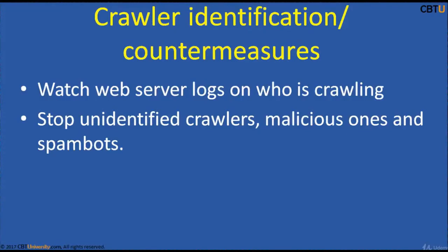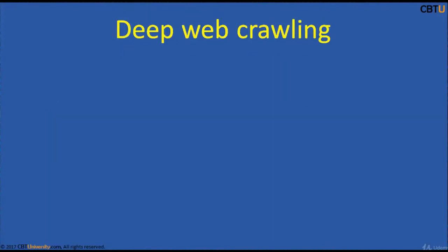Spam bots and other malicious web crawlers don't put identifying information in the user agent field. They may mask their identity as a browser or other well-known crawler. Crawlers may be accidentally trapped in a crawler trap, or may overload the web server with requests. Web admins need to stop such malicious crawlers, and identification is also useful for admins in distinguishing genuine crawlers versus malicious ones.